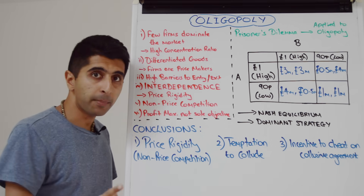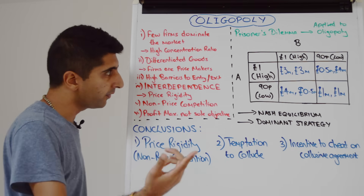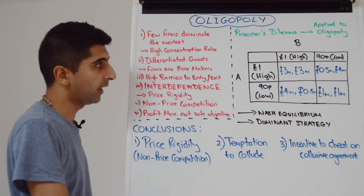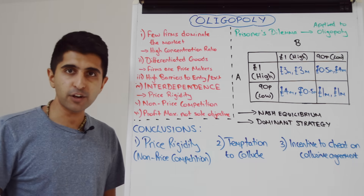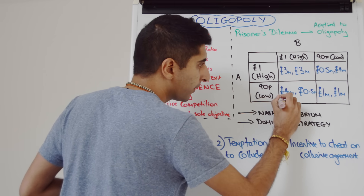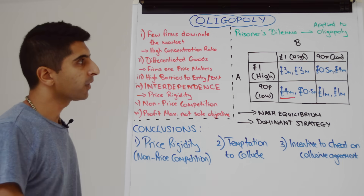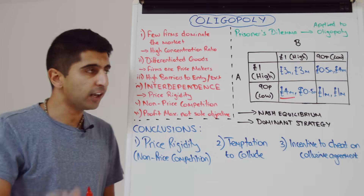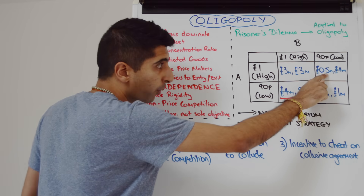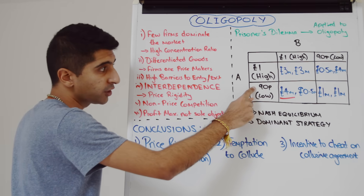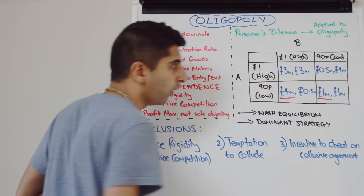If firm B decides to charge £1, these two cells are open. Firm A could either charge £1 as well and earn £3 million, or they could undercut firm B and charge 90 pence and earn £4 million. The rational outcome clearly is to undercut and earn £4 million, so we underline that rational outcome. What if firm B goes for 90p? Firm A could charge the high price of £1 and earn £0.5 million, or follow and charge the low price and earn £1 million. Naturally, £1 million is greater, so we underline that.